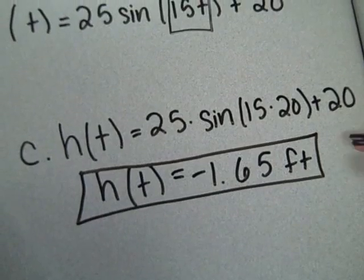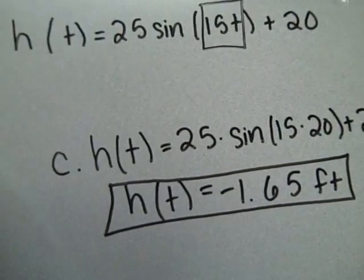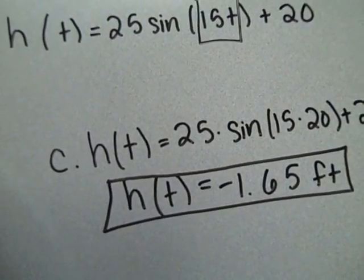Which is possible because at some point the Ferris wheel is below ground. So it's possible to have a negative number as your answer.